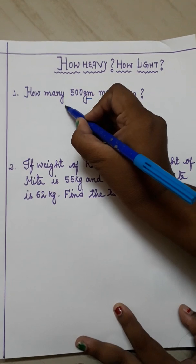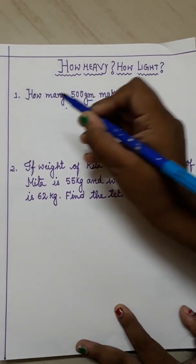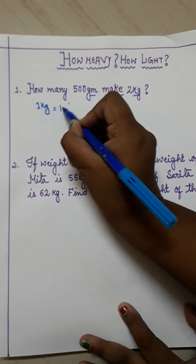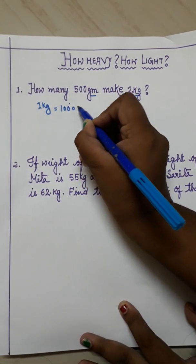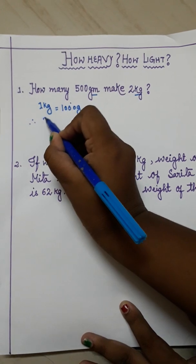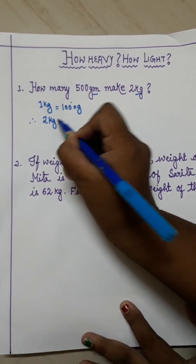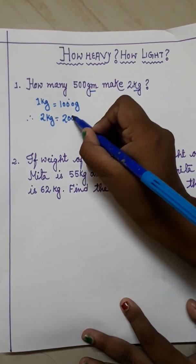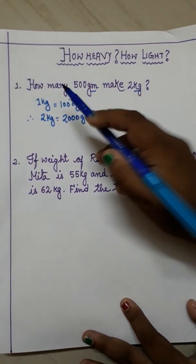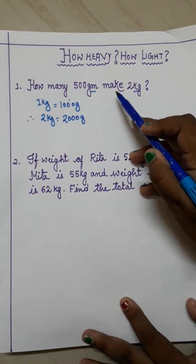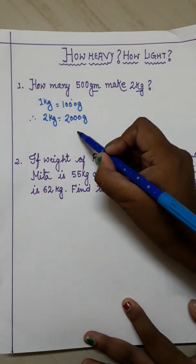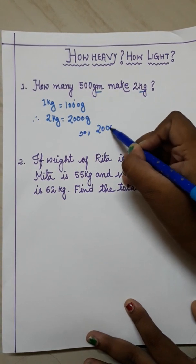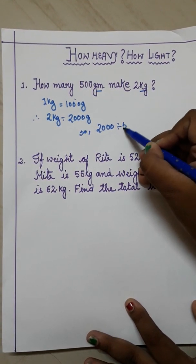We will convert the kg into gram at first. So we will write here 1 kg equals to 1000 gram. So 2 kg will be how much gram? That you know, that will be 2000 gram. Now, the question is how many 500 gram make 2 kg?